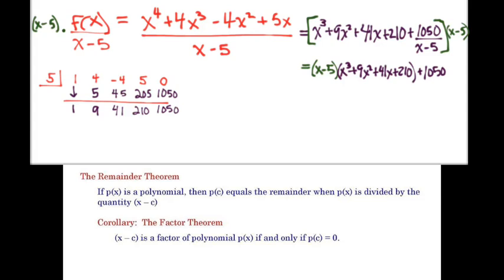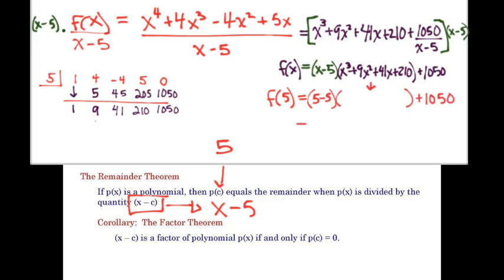And then plus 1050, because these two actually cancel out here. And we can see, if I plugged in f of 5, so if I wanted to figure out f of 5, which down here is p of c, if I put in f of 5, I would see what's going to happen here. f of 5, well, 5 minus 5 is 0, right, times something, plus 1050, right? That would be 1050.